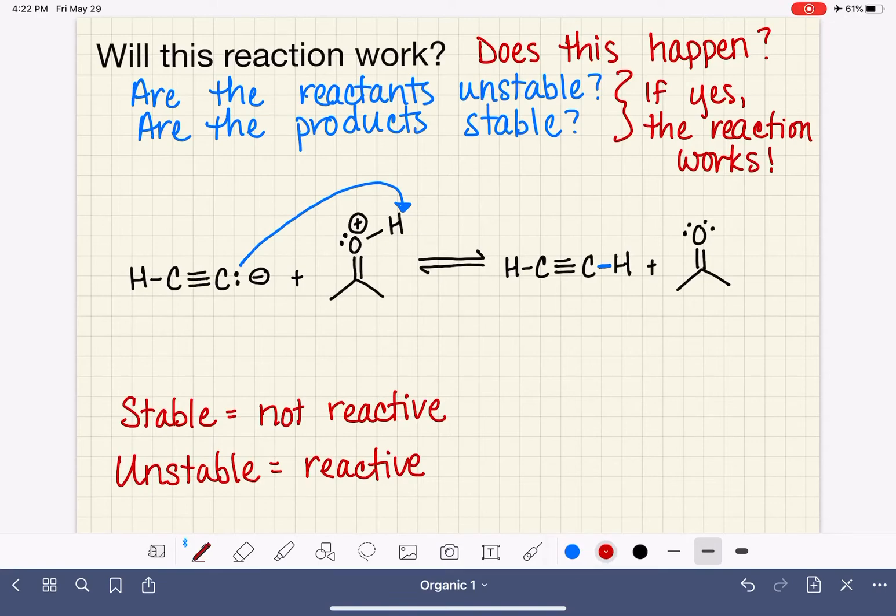And then with another curved arrow, we want to show the oxygen-hydrogen bond breaking and the lone pair of electrons moving on to the oxygen atom. So there's our mechanism.